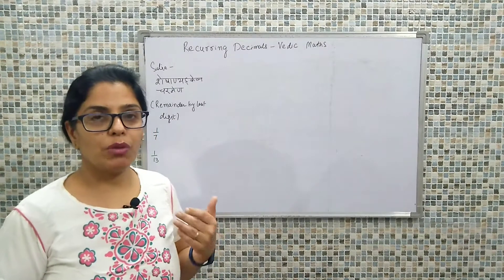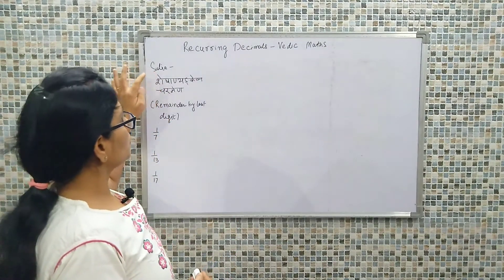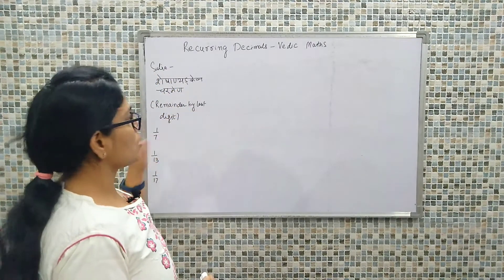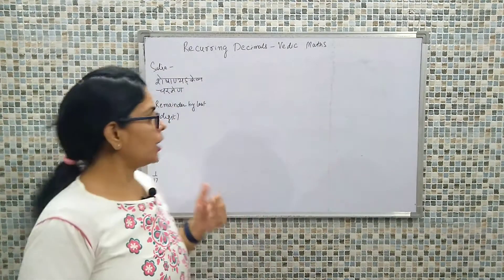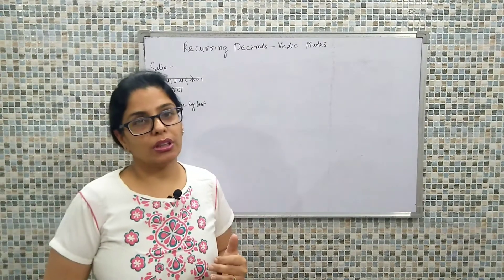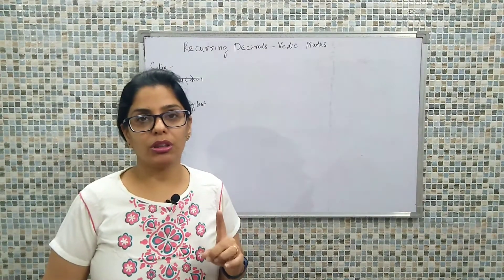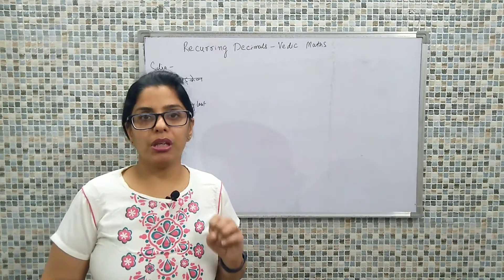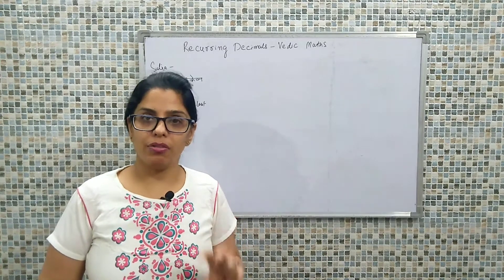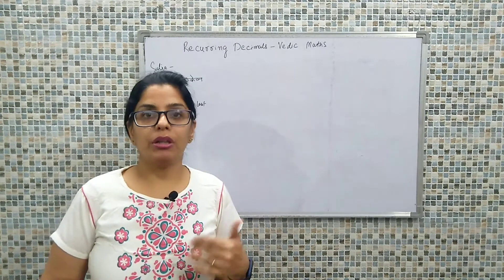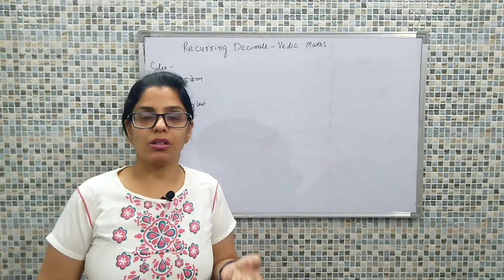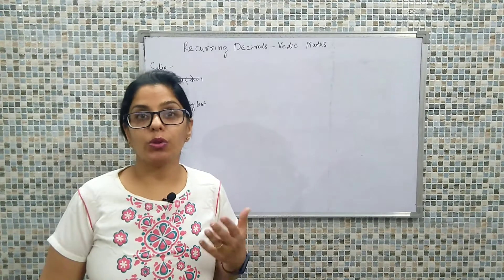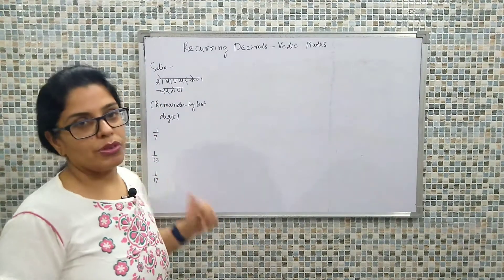But in today's discussion, what we will be taking is the Sutra that is 'Sheshanya Kena Charmena', which means 'remainder by the last digit'. When we take such examples and do division, we will identify the first logic — which GP series, that is geometric progression series, follows — and we will calculate the remainder by the remainder. By using the concept of remainder, we would be identifying the value of the quotient when we proceed for division of these values.